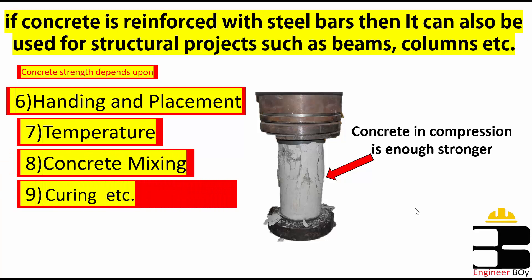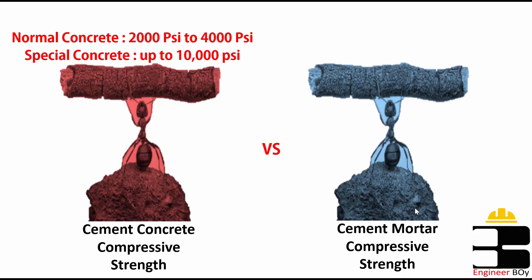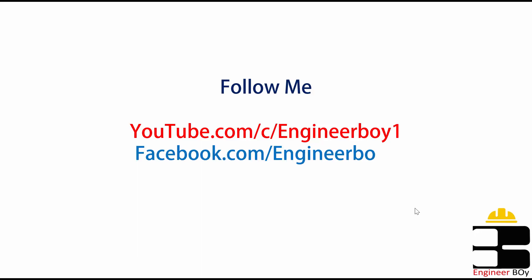The strength of normal concrete can range from 2,000 psi to 4,000 psi, which can reach up to 10,000 psi in the case of special concrete after 28 days of placement. The strength of ordinary Portland cement mortar can be up to 3,000 psi after 28 days of placement. Thank you guys for watching.